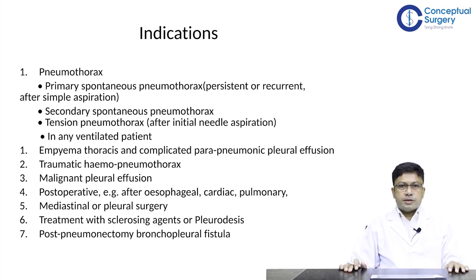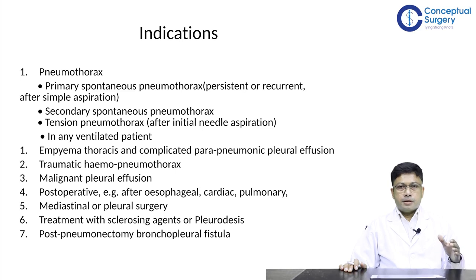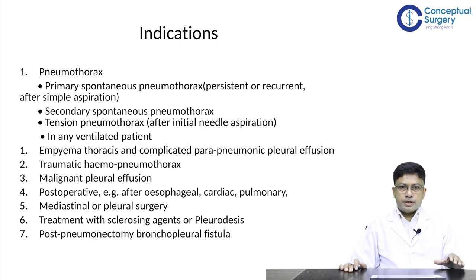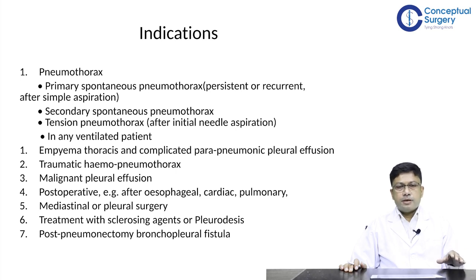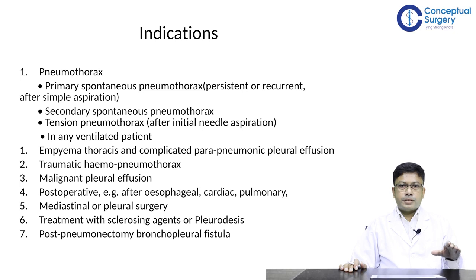Commonly the chest tube is inserted for presence of fluid or air in the pleural cavity. The presence of air is known as pneumothorax, which can be a spontaneous pneumothorax, secondary to a diseased lung, or a traumatic pneumothorax. When air accumulates too fast in the pleural cavity causing complete lung collapse and mediastinal shift to the opposite side, emergency decompression is required — initially with a needle followed by tube thoracostomy. This condition is called tension pneumothorax.